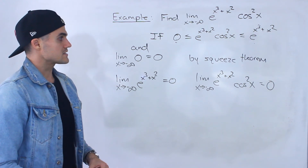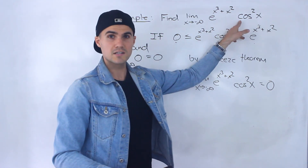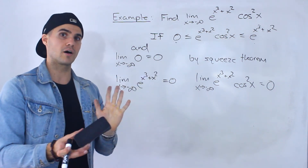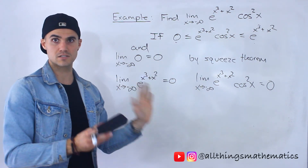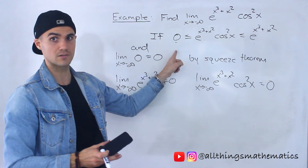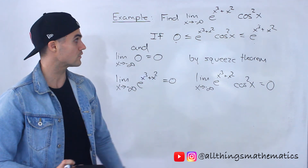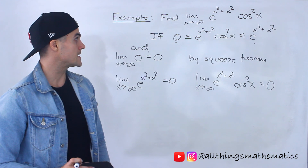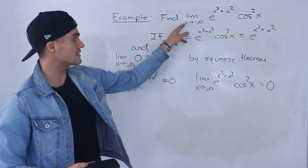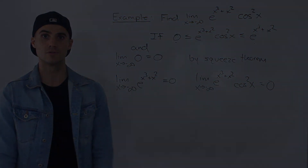So just be on the lookout — especially for cos squared x or sine squared x. Instead of being between negative 1 and positive 1 like sine x and cos x by themselves, they're actually between 0 and positive 1. Just be on the lookout on the midterm for that kind of stuff. This limit here is equal to 0.